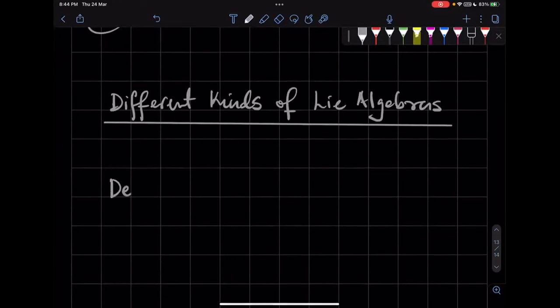So the first definition is a simple Lie group. From the simple Lie group, we'll go to the simple Lie algebra, of course. So what is a simple Lie group?